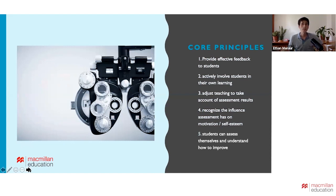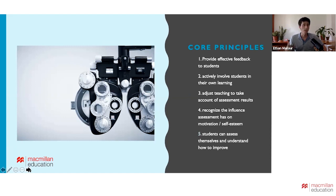The fifth core principle is that students can assess themselves and understand how to improve. This is a way of getting students more actively involved in their learning — being more active, less passive, with a better understanding of how things are assessed, which gives them the ability to perform better and keep assessment criteria in mind whether in class or working on a project. This ability to self-monitor — to think about how we're doing and how we could do better — is actually a very important life skill that students will need throughout their academic and professional careers.